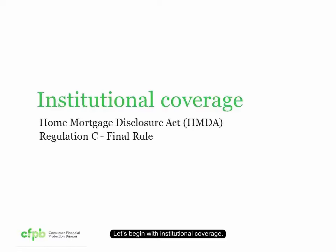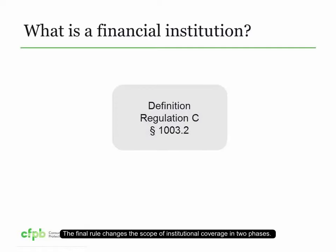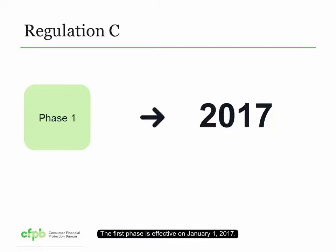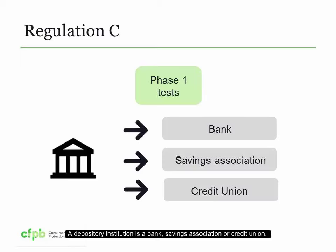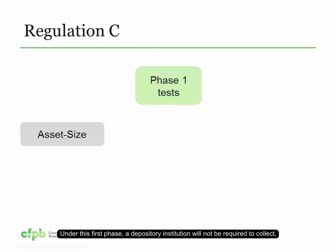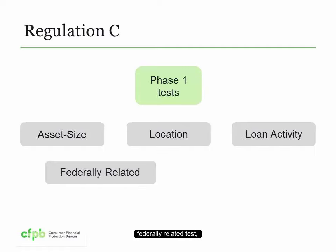Let's begin with institutional coverage. An institution is required to comply with the rule only if it meets the definition of financial institution as defined by Regulation C in Section 1003.2. The final rule changes the scope of institutional coverage in two phases. The first phase is effective on January 1, 2017. This first phase narrows the scope of depository institutions subject to Regulation C. A depository institution is a bank, savings association, or credit union. Under this first phase, a depository institution will not be required to collect, record, and report HMDA data unless it meets the asset size tests, location tests, loan activity tests, and federally related tests.